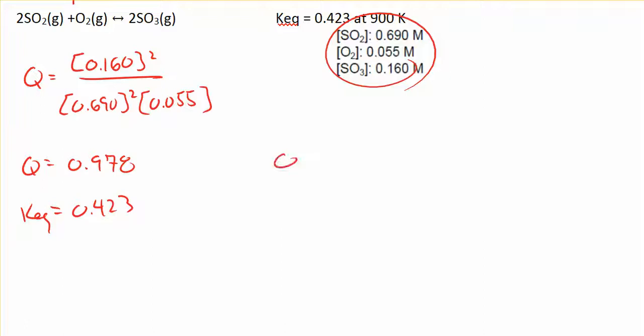So in this case, I have a Q that's greater than Keq. That is to say, the quotient products divided by reactants is too large. To make that smaller, we want to decrease the amount of products, increase the amount of reactants.